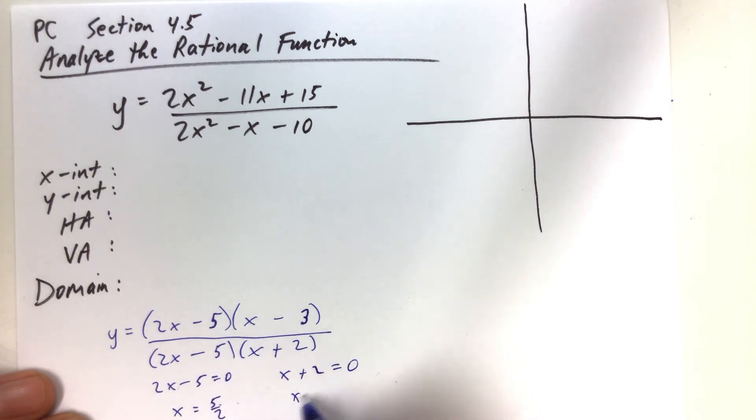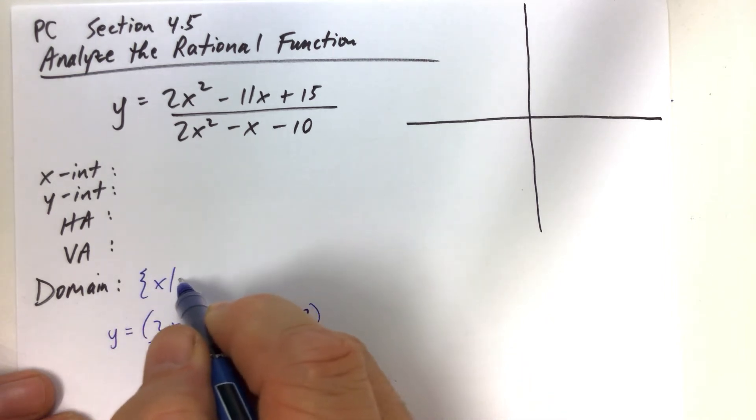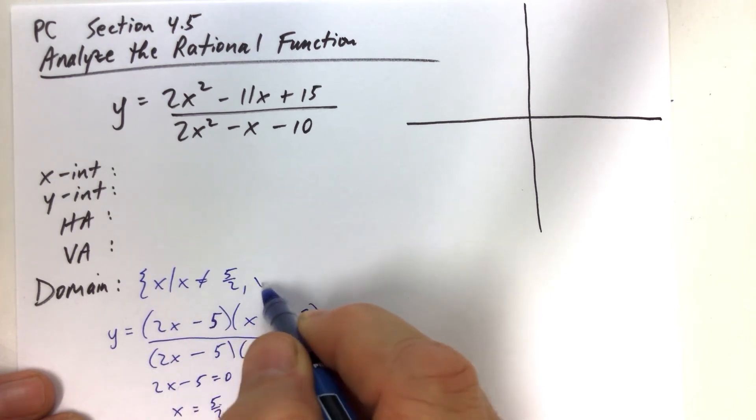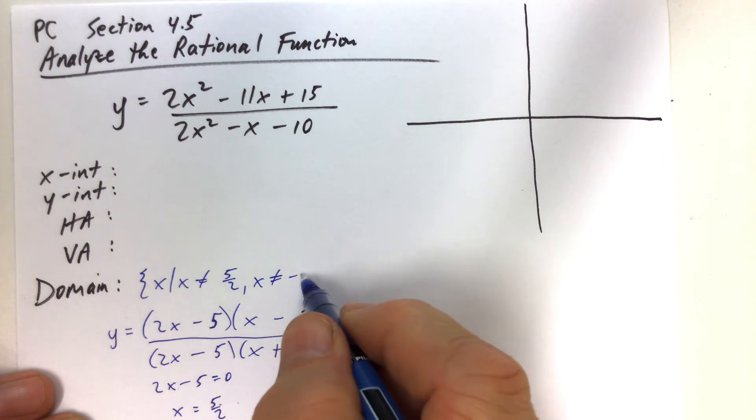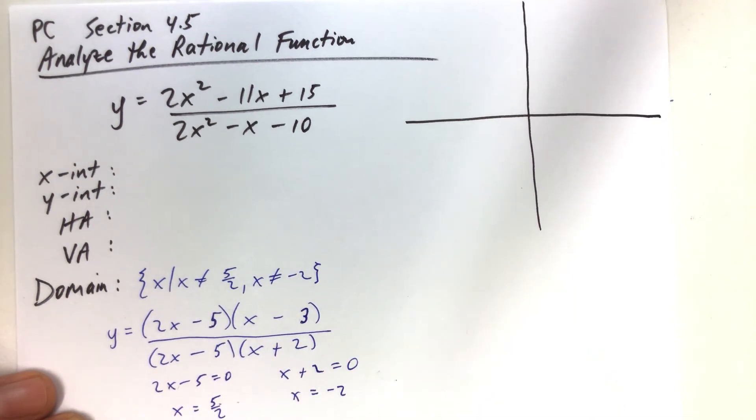So if we subtract 2 from both sides here, we get x is equal to negative 2. So we know that the domain is all real numbers x, such that x cannot equal 5 halves. And x is also not allowed to equal negative 2. So the question is, do we have vertical asymptotes at both of those?